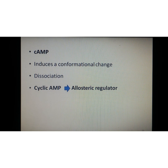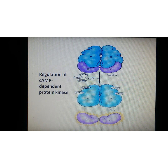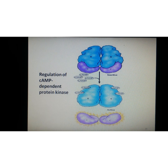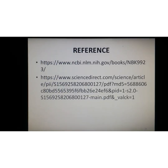Cyclic AMP acts as an allosteric regulator by altering protein-protein interactions. When cyclic AMP binds to the regulatory subunits, it induces a conformational change that leads to dissociation of the complex, and the free catalytic subunits are then enzymatically active. In the diagram, at the inactive state the enzyme consists of two regulatory (R) and two catalytic (C) subunits. Upon cyclic AMP binding, the regulatory subunits dissociate from the catalytic subunits, making the free catalytic subunits active.